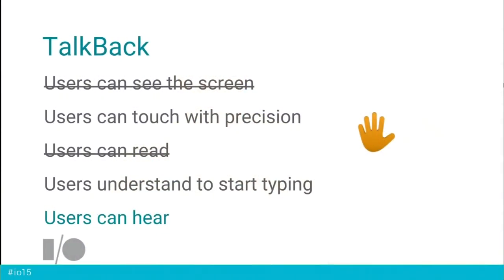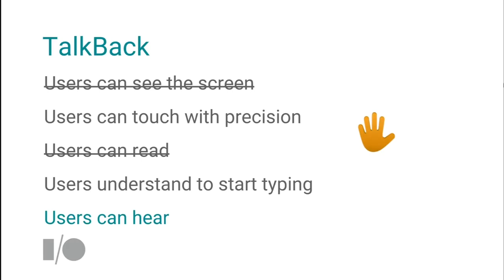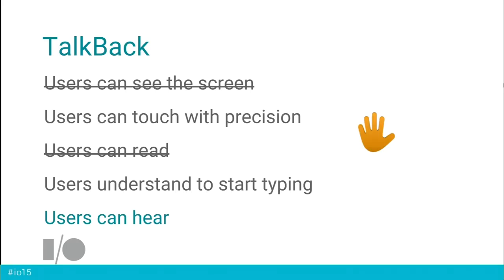We have services called accessibility services in Android. The first one I want to show you is called TalkBack, which ships with Android and is a screen reader. What a screen reader does is remove the assumption that users can see the screen, and replace it with the assumption that users can hear. It reads what's on the screen and guides users with spoken feedback to find the actions they want to take to navigate the device.